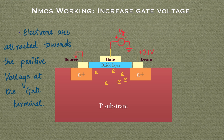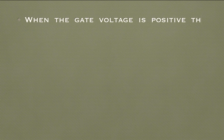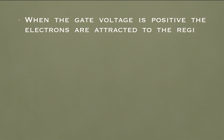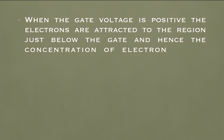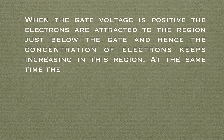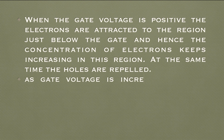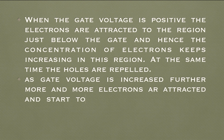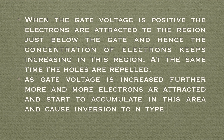Electrons are attracted because of the positive voltage at the gate terminal. When the gate voltage is positive, electrons are attracted to the region just below the gate and their concentration keeps increasing in this region, while holes are repelled. As the gate voltage is increased further, more and more electrons accumulate in this area, causing the inversion of this region from P-type to N-type.